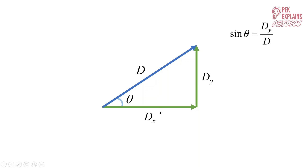You see that D, DX, and DY — these three form a right angle triangle. So we can use trigonometry to calculate DX and DY. Sine theta is opposite over hypotenuse.